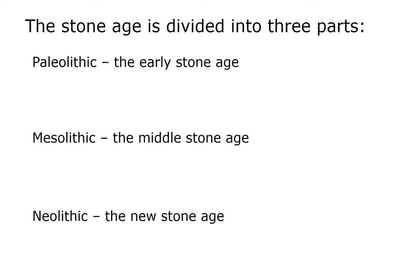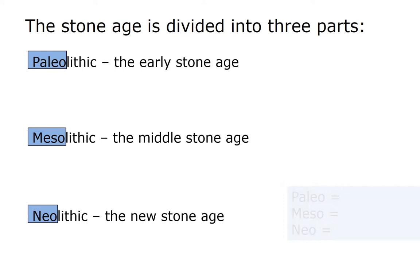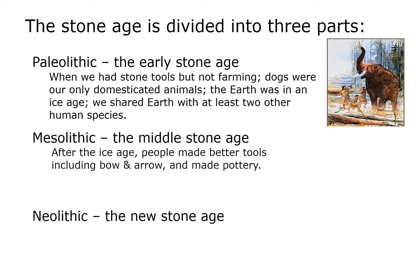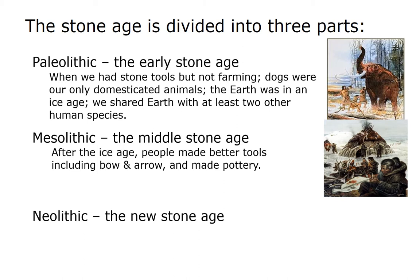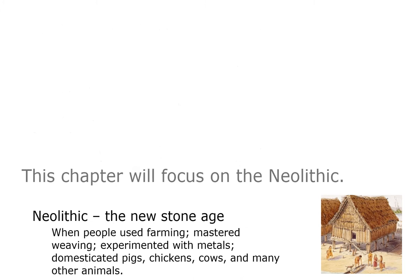The Stone Age is divided into three parts: the Paleolithic, the Mesolithic, and the Neolithic. The word 'lith' means stone, and the prefixes paleo, meso, and neo mean early, middle, and new. In the Paleolithic, we had stone tools but not farming; dogs were our only domesticated animals, and the Earth was in an Ice Age. We shared Earth with at least two other human species. The Mesolithic came after the Ice Age — people made better tools including bows and arrows, and pottery. In the Neolithic, people used farming, mastered weaving, experimented with metals, and domesticated pigs, chickens, cows, and many other animals.